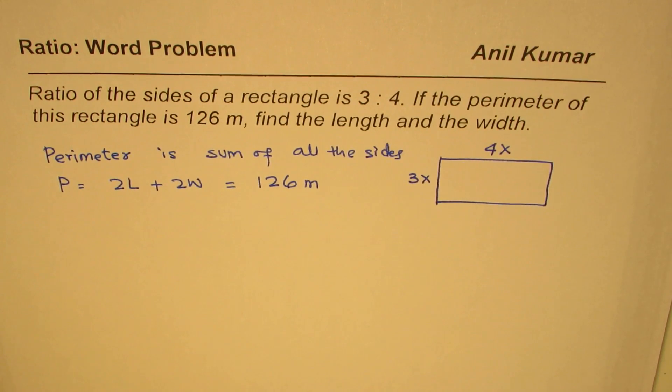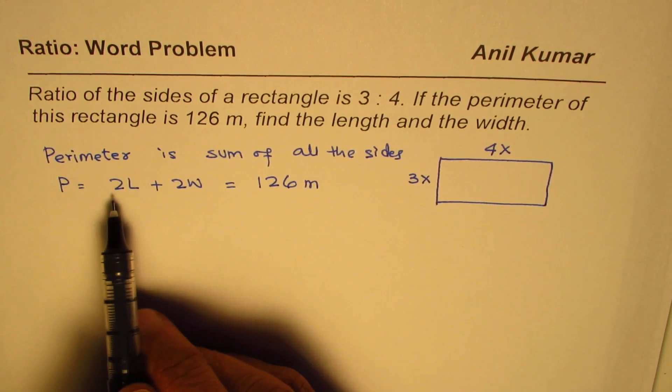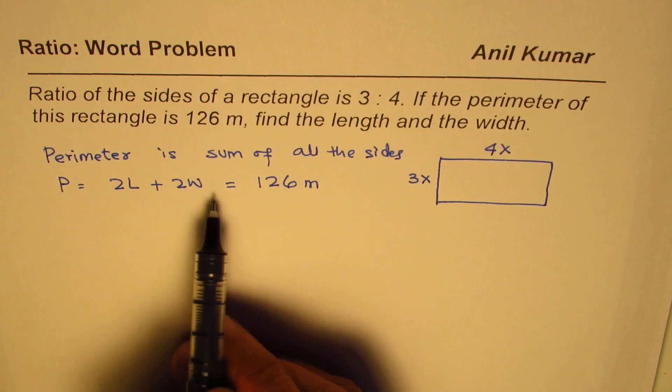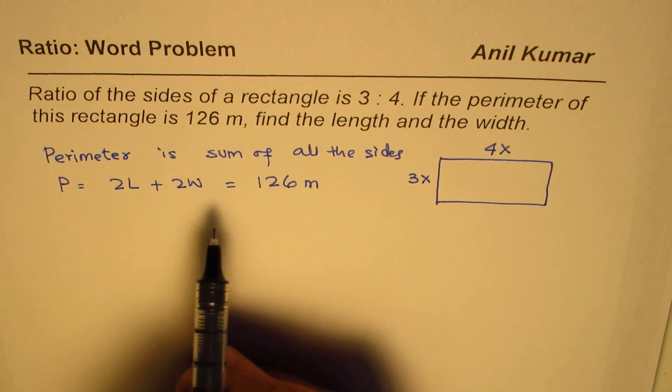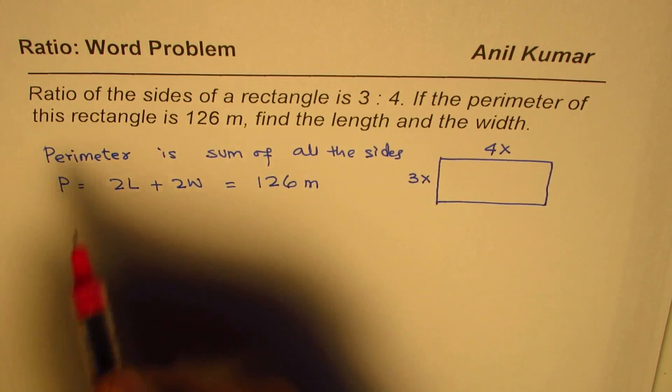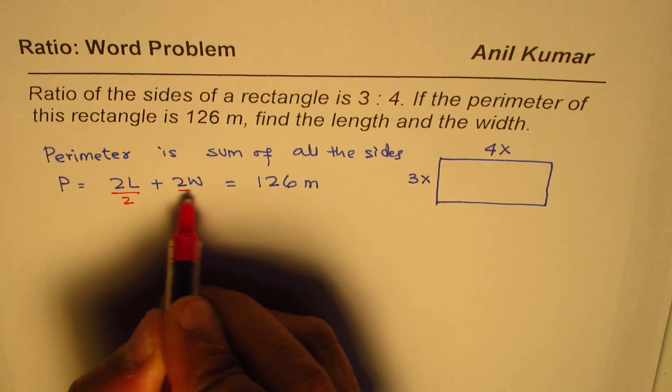Now, my approach is that we have already written perimeter. That means twice length and twice width is 126. Now, if I divide each by 2, if I divide each by 2,